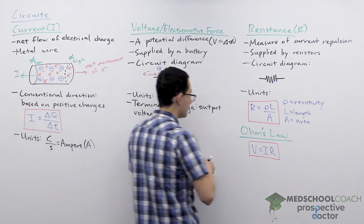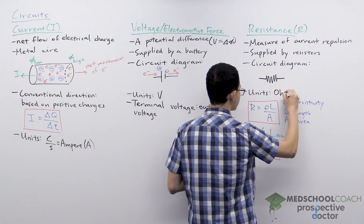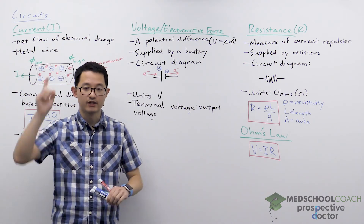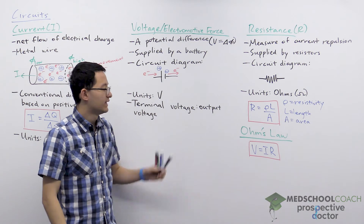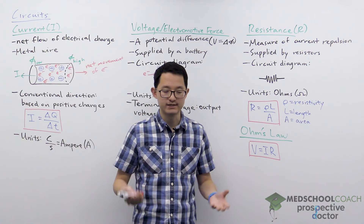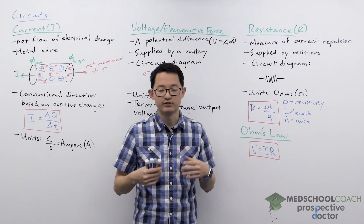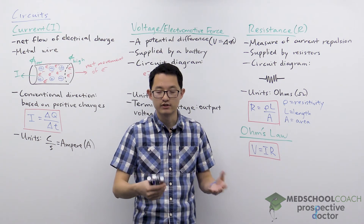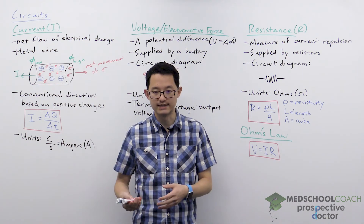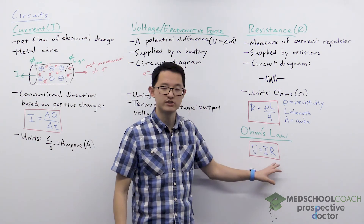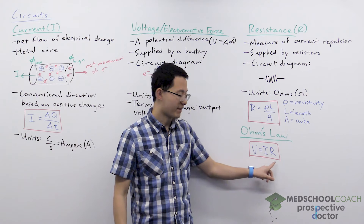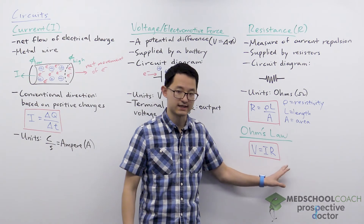The units for resistance are ohms, denoted by the letter omega. Now that we've discussed current, voltage, and resistance, we can talk about Ohm's law. Ohm's law states that if current passes through a resistor, the current is directly proportional to the voltage and inversely proportional to the resistance. We often rearrange this as: voltage equals current times resistance. Another interpretation is that if current passes through a resistor, you get a voltage drop across that resistor.